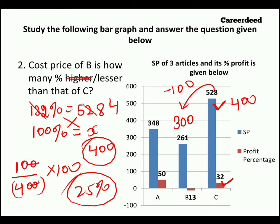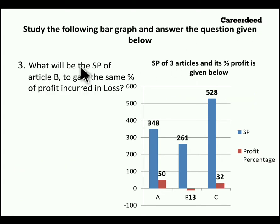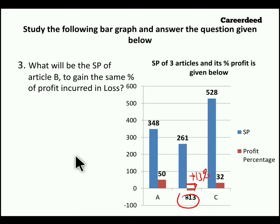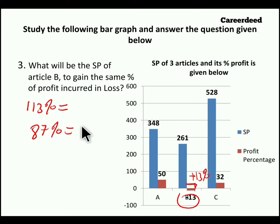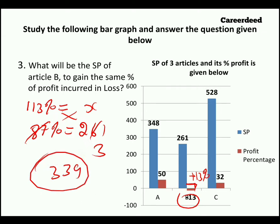Answer for that question is 25%. Moving to the third question: what will be the selling price of article B to gain the same percentage of profit as the loss incurred? Article B incurred a loss of 13%, so we need to gain the same 13%. For that, he has to sell the article for 113% — 100 plus 13. We know 87% is 261 rupees, so if 87% is 261 rupees, what is 113%? Cross multiplying gives 3 times, so 3 into 113 equals 339 rupees. If the person sells the article for 339 rupees, he will get a 13% profit; if he sells for 261 rupees, he gets a 13% loss.